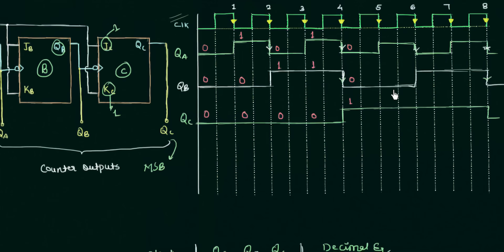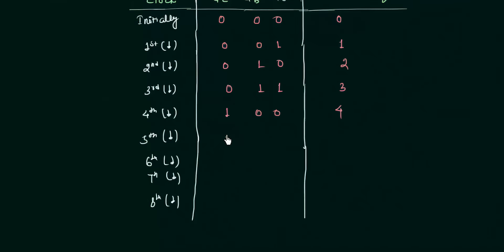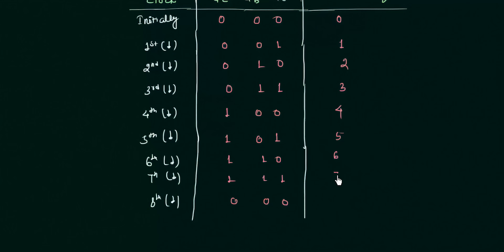For the seventh falling edge we have 111 = 7, and for the eighth falling edge we are back to 000 = 0. So the counter starts counting from 0 and ends at 7, then returns to 0. Counting the clock pulses before returning to 0: 1, 2, 3, 4, 5, 6, 7, and 8 — giving 8 states in total.